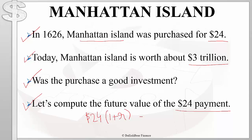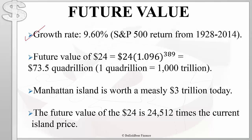We could have invested that twenty-four dollars at different interest rates or growth rates and come up with a future value. Suppose that back in 1626 we could have invested in some kind of a stock index as the alternative investment. In that case, we can use the growth rate of 9.6%, which is the return on the S&P 500 from 1928 to 2014.